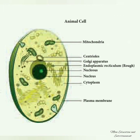Animal cells are usually smaller than plant cells and not as hard when compared with plant cells. A cell wall is absent in animal cells, and there is usually no chloroplast in animal cells. Animal cells have many small vacuoles and consist of centrioles.